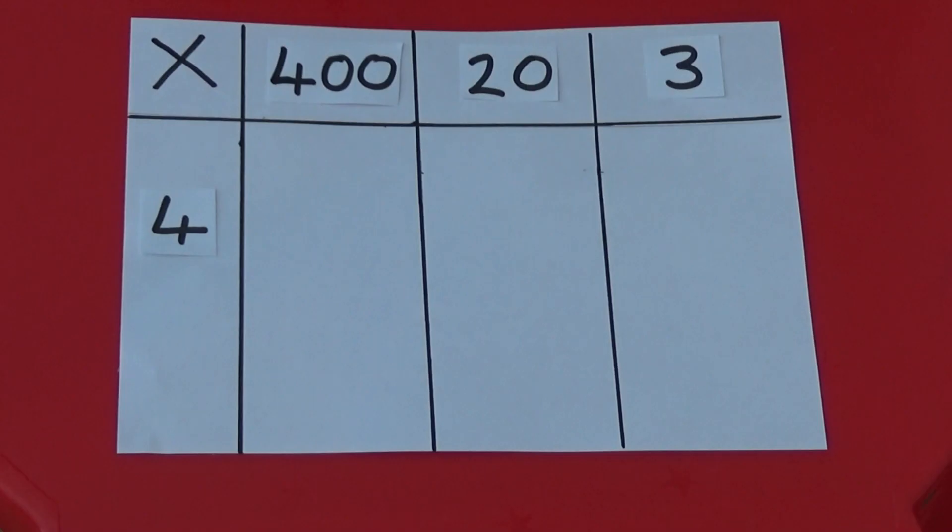The first thing I need to do is make 423 using hundreds, tens and ones counters. For the 400, I need four hundreds counters, for the 20, I need two tens counters, and for the 3, I need three ones counters.